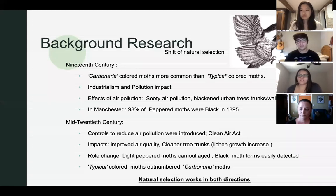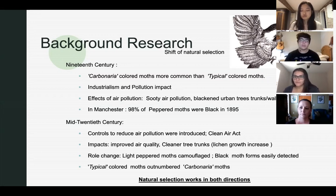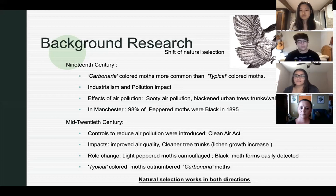Peppered moths were originally white with black specks on the wings, which allowed the species to camouflage against tree trunks. Due to a genetic mutation, black forms of moths were introduced to the species. At the time, black moths' survival was significantly less than light colored moths as they could not camouflage to their environment. In the 19th century, the ratio of carbonaria moth to typical moth flipped due to the rise in industrialization and coal fires, increasing air pollution and causing blackened tree trunks and walls.